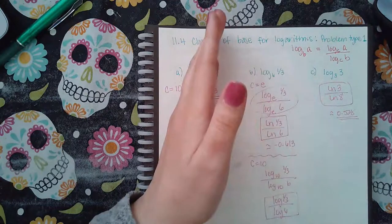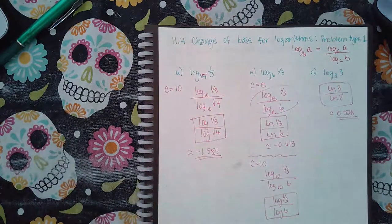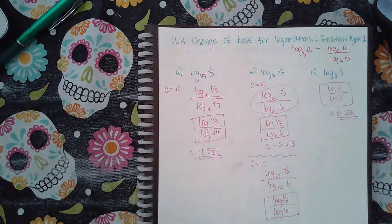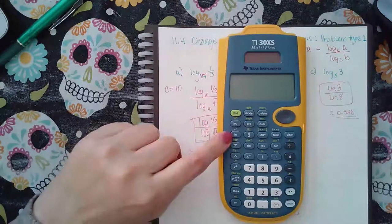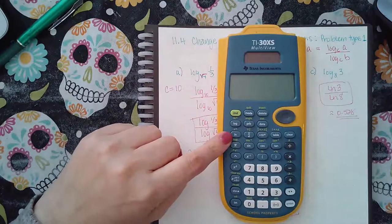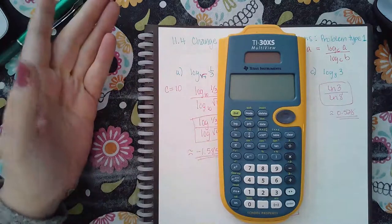And those two bases are the only two bases that we have on the calculator, which are the common log base 10 and the ln, which is the natural log, which is base e.